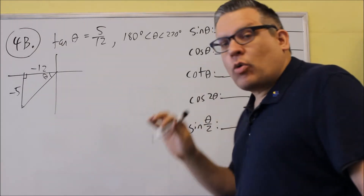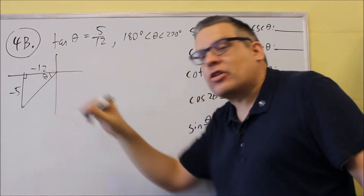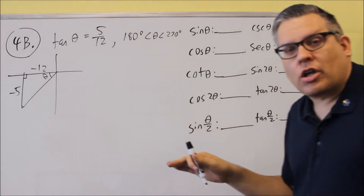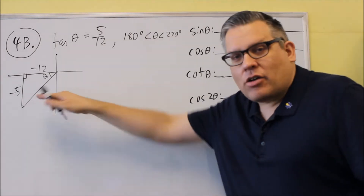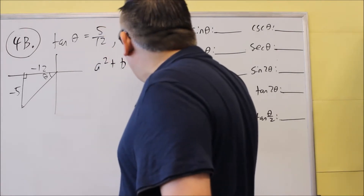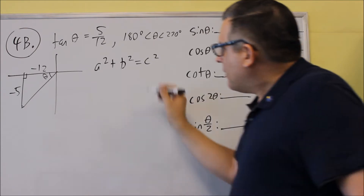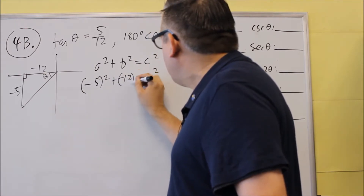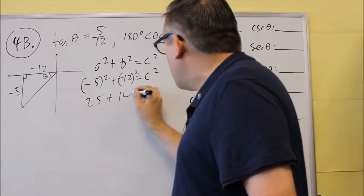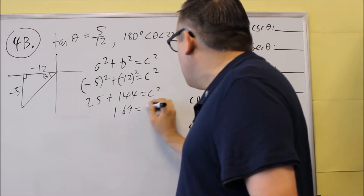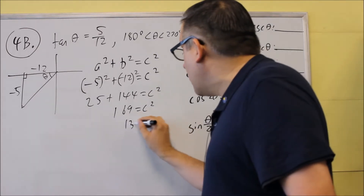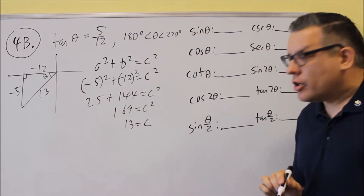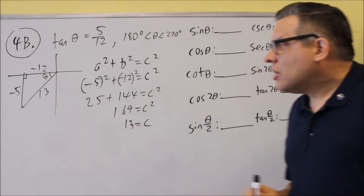Don't just draw a regular triangle without a quadrant. Get in the habit of drawing it in a quadrant, because if you just draw a regular triangle and make it all positive, you're not going to get the correct answer. So we have it drawn down here. We have our a² + b² = c². In this case, c is going to be the unknown. So we have negative 5 squared and negative 12 squared. We get 25 + 144 = c², giving us 169, so c = 13. The hypotenuse is always going to be positive regardless of what quadrant you're in, so even though we get plus or minus, we're choosing to make that positive.